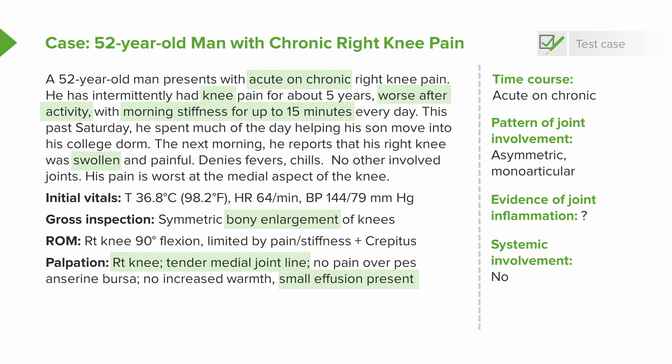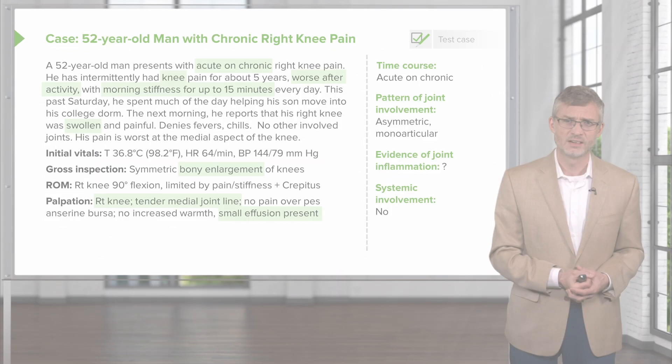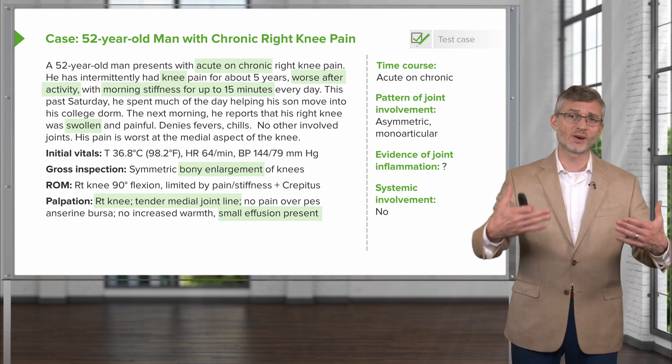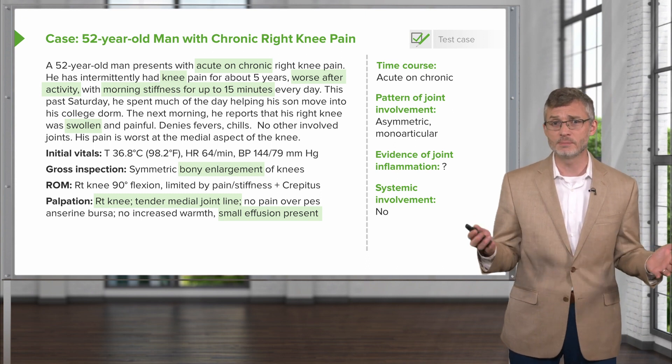Let's go back to our case and look for key features. We have an acute on chronic picture — very typical for osteoarthritis. Worse after activity, with morning stiffness lasting less than 15 minutes — also typical. The swollen joint can happen as acute synovitis on a backdrop of chronic osteoarthritis; it's not common, but it does happen. Bony enlargement of the knees due to osteophytic growths is common, especially on radiographs, and tenderness on the medial joint line also supports the diagnosis. To recap, classic features of osteoarthritis include a chronic disease with periodic flares, typically precipitated by increased activity, with asymmetric symptoms and inexorable progression.